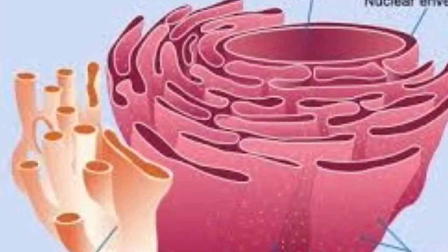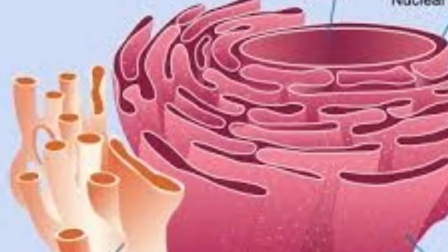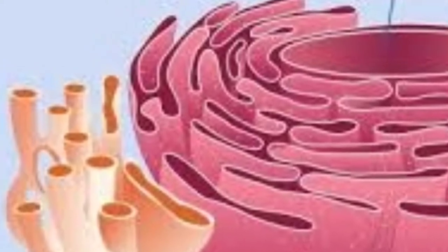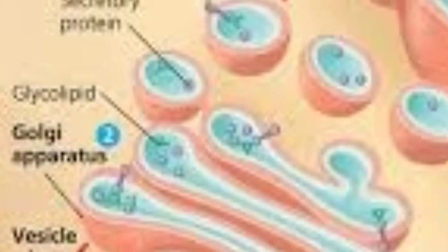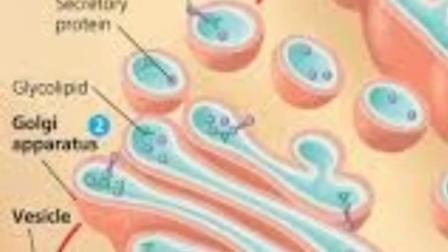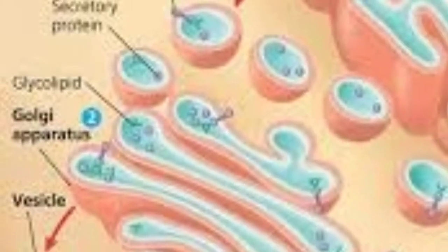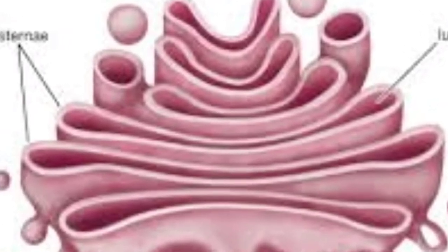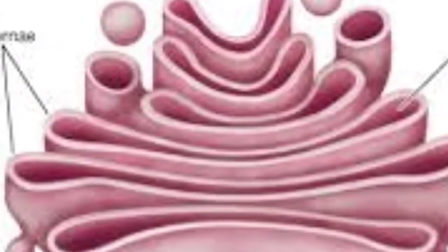Endoplasmic reticulum is present between the nucleus and the plasma membrane. Keith R. Porter discovered the endoplasmic reticulum in 1945. It helps in the synthesis of the membrane and performs metabolic processing.